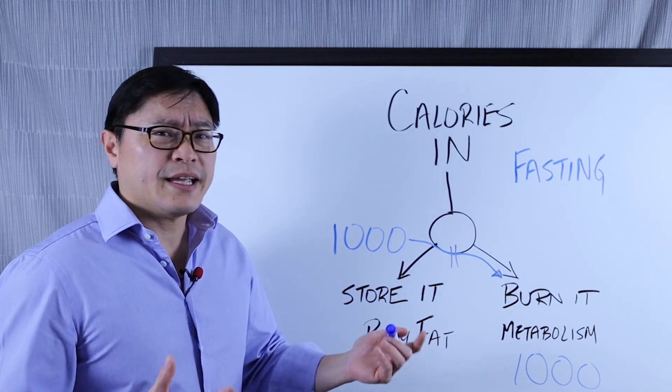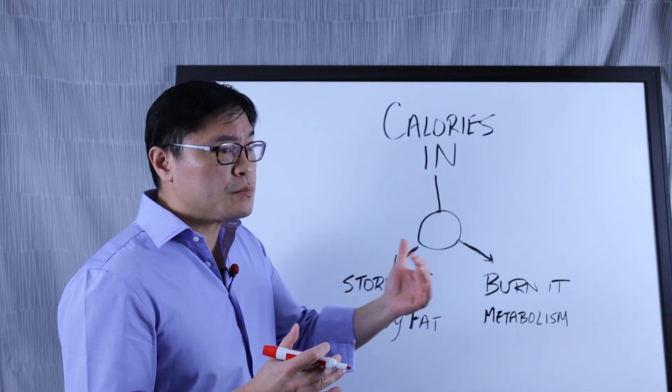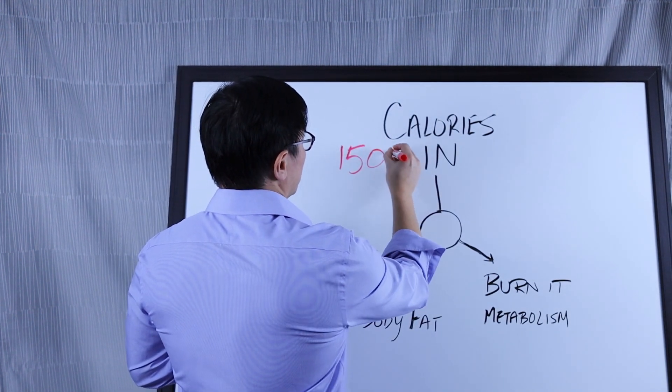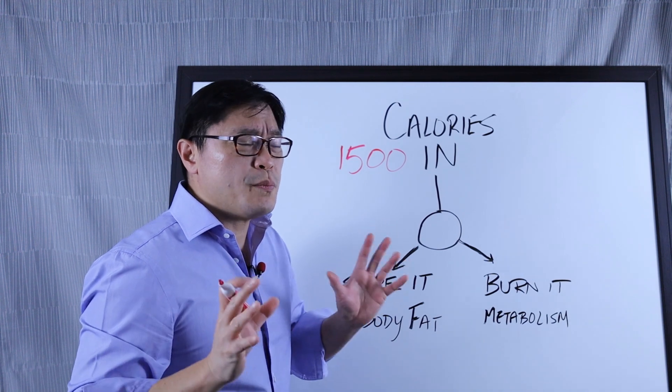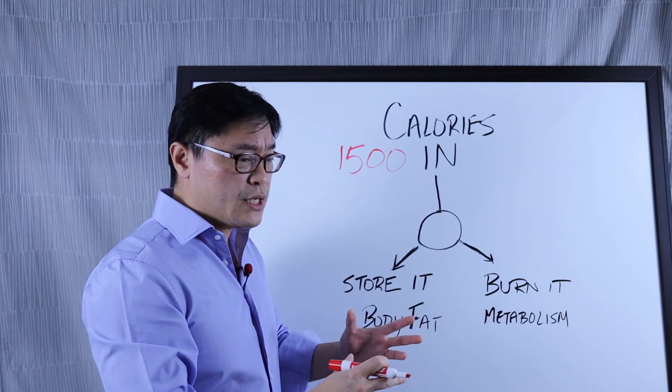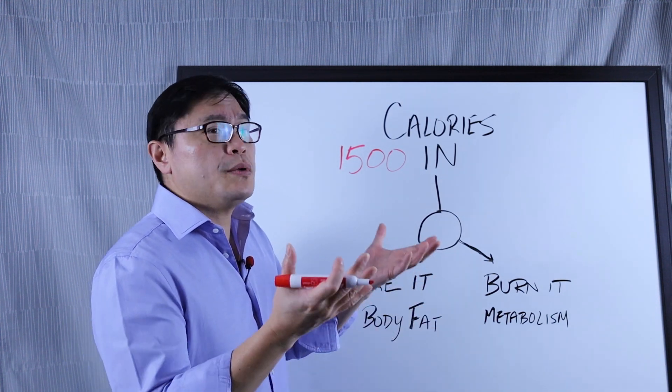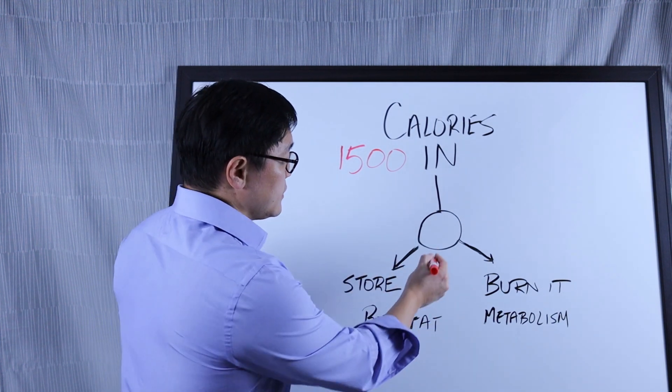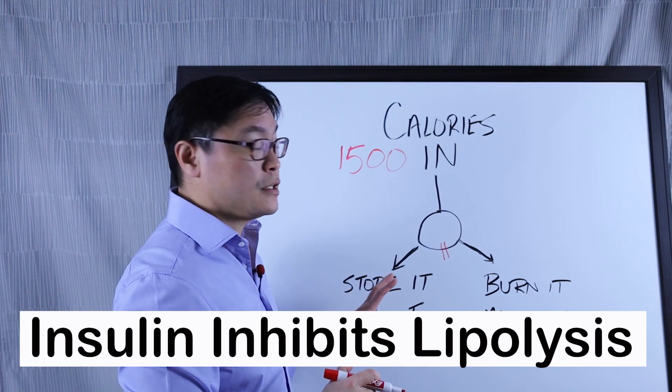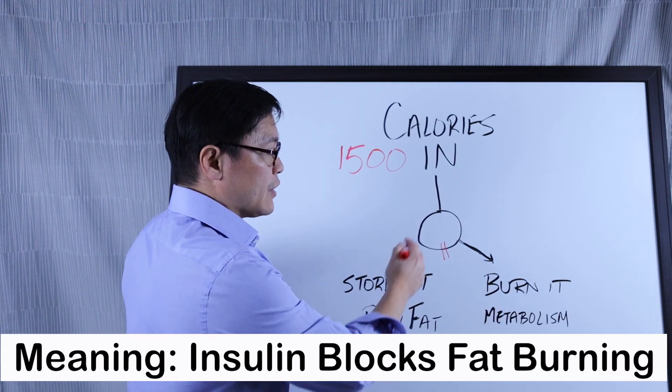So why didn't the calorie counting method work? In our example, we tried to reduce the number of calories we took to 1,500. However, if you don't pay attention to having a good period of fasting and you're eating six, seven, eight times a day with foods that stimulate insulin, you're keeping your insulin levels high. What insulin does is block the ability for you to use your body fat.